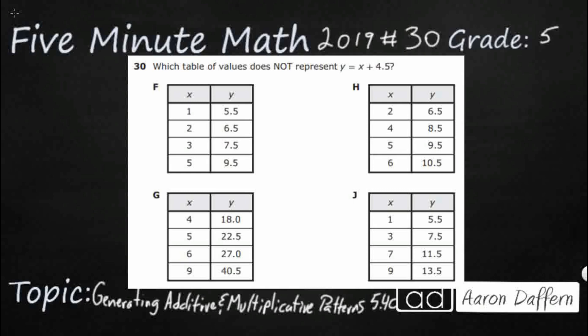We need to find the table of values that does not represent this additive relationship, this additive pattern of x plus 4.5 equals y. We are simply going to use substitution. What that means is we are going to take our x values and substitute that into this equation right here and see if we get the correct y value. It looks like we've got most of our numbers 1 through 9, might be missing 8.